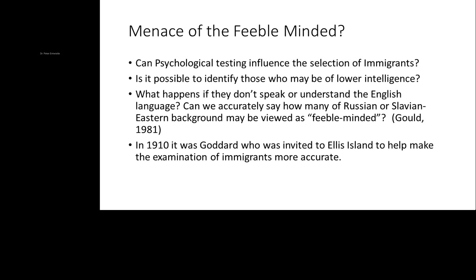As Gould pointed out, if a person fails to understand the English language because it's not their primary language — coming from Russia or a Slavic Eastern background — would they be able to cooperate with the testing? Gould noted that there was concern that some of those individuals were not doing well on the tests and were therefore being viewed as feeble-minded. Gould pointed out in 1981 that it's ridiculous to think that so many individuals speaking Slavic or Russian languages would be deemed feeble-minded. Even in those days, Goddard thought he could make the examination of immigrants more scientific and assist in the selection and support of individuals coming from different parts of the world.